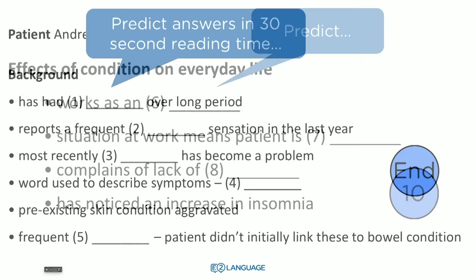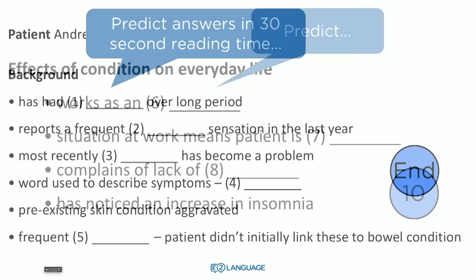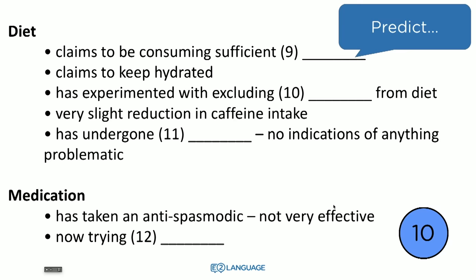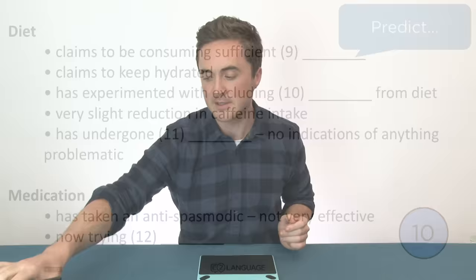Let's look at the next set — six, seven, eight. Try to predict what type of word might fit here: 'Works as an...' Then nine, ten, eleven, and twelve.